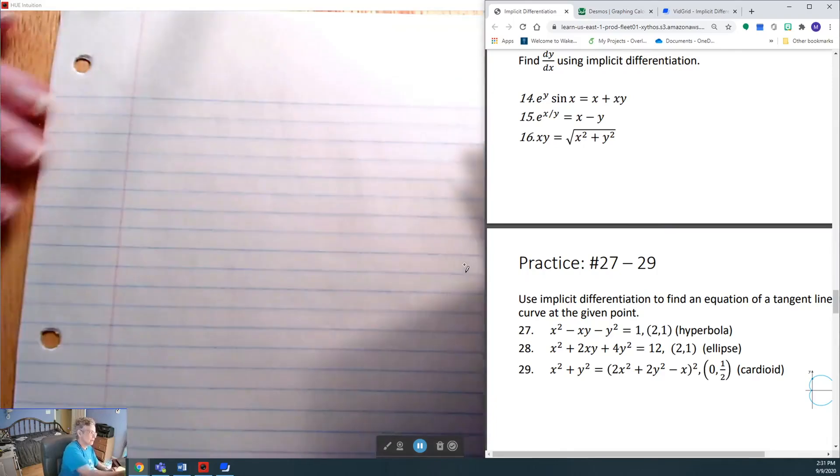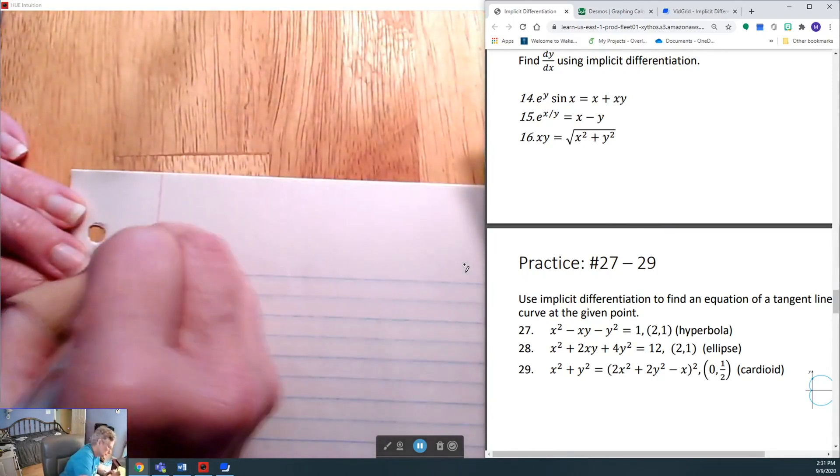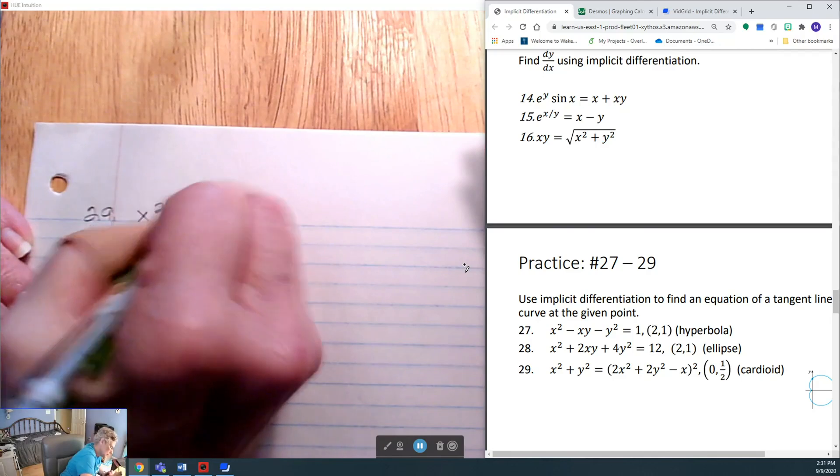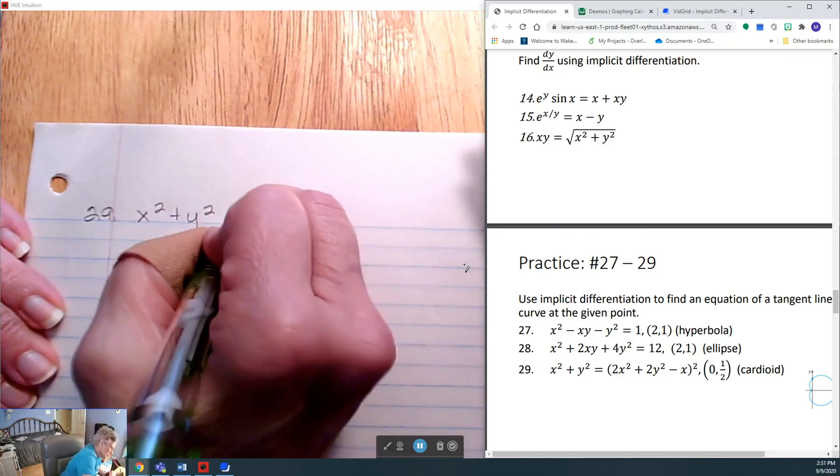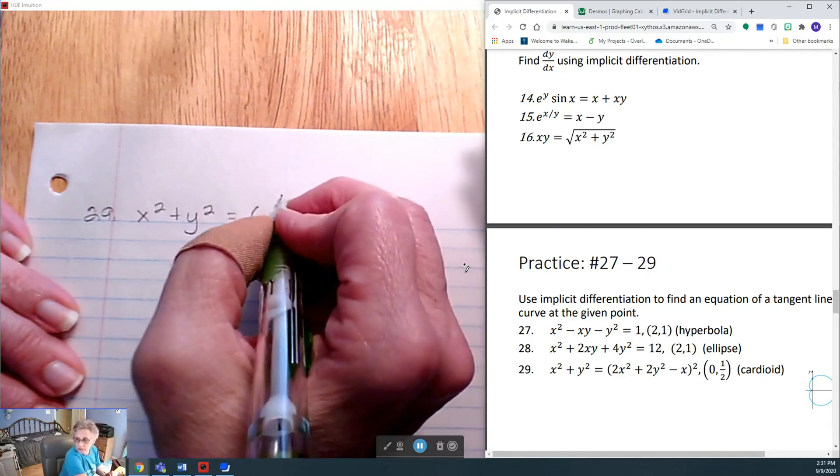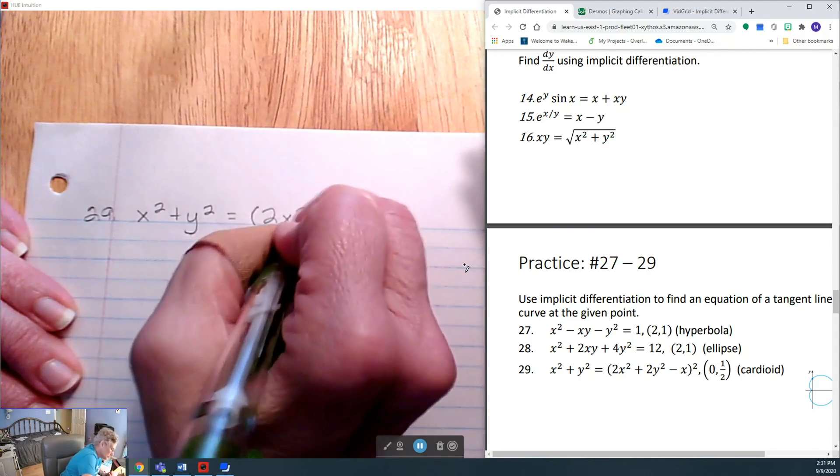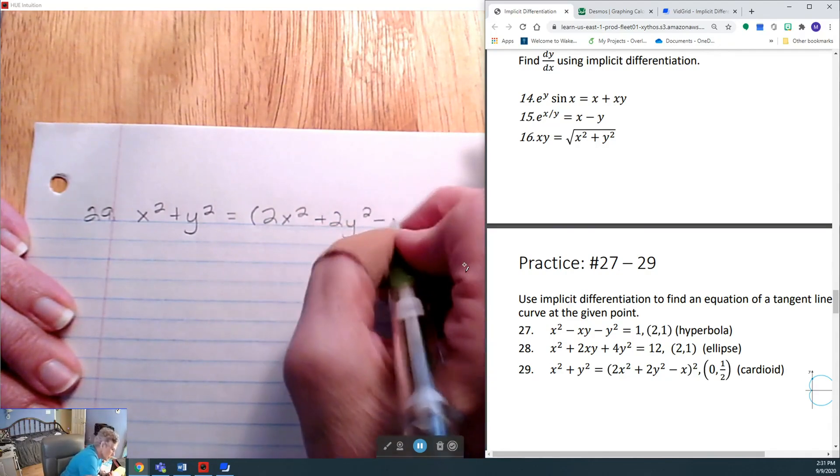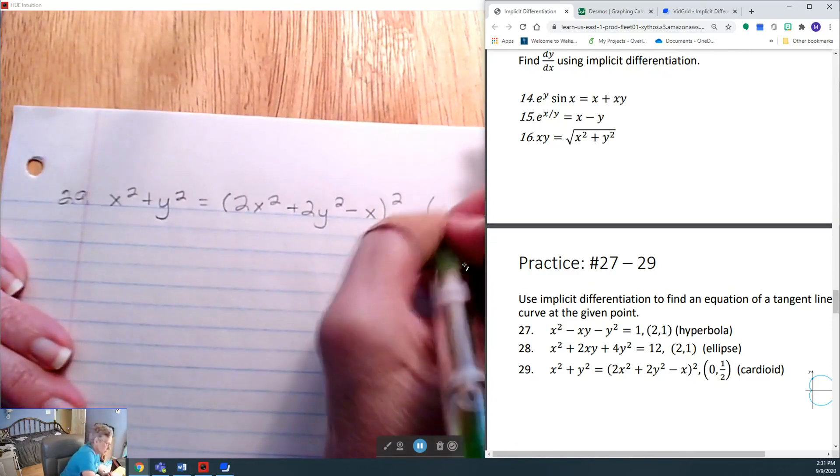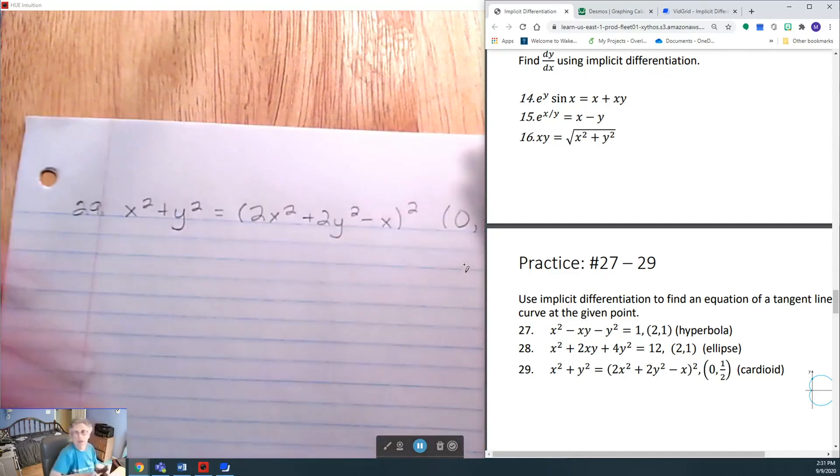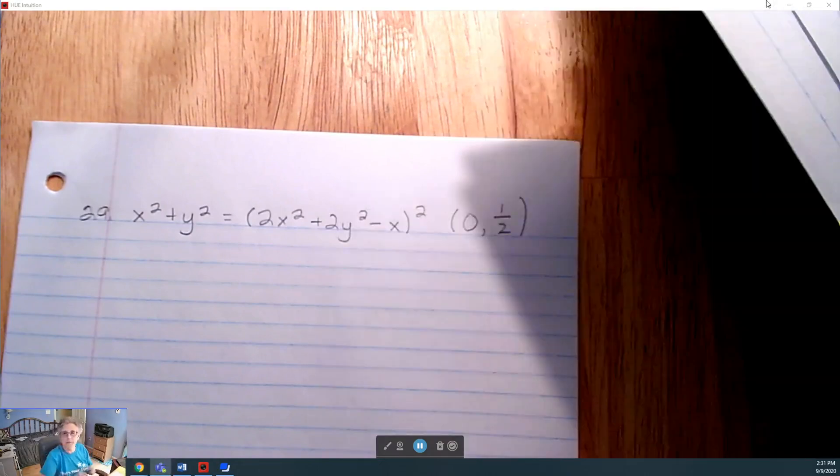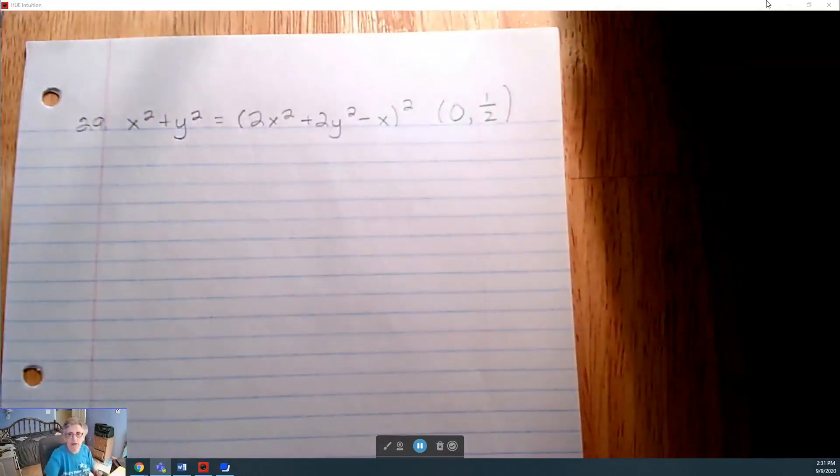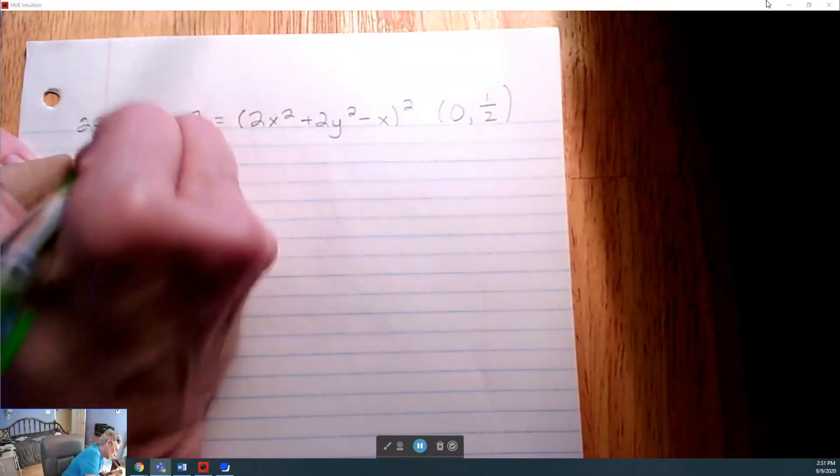Leave myself some room to do the others. x squared plus y squared is equal to, open up a set of parentheses, 2x squared plus 2y squared minus x, whole darn thing squared. And we're going to write the equation of the tangent line at the point 0, 1 half. Let me do that so it doesn't make a shadow.